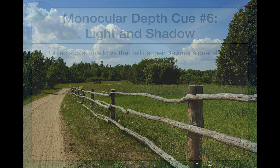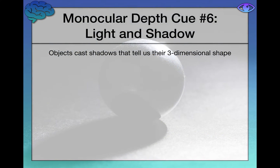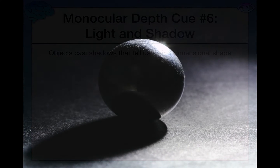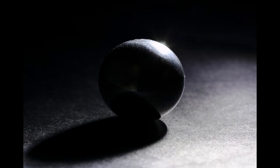Finally, our last monocular depth cue is light and shadow. Objects cast shadows, and those shadows tell us all sorts of things about their three-dimensional shape, from which we can judge depth. Looking at this scene of just light and shadow — no color, nothing like that — we can still really judge the depth of the object.